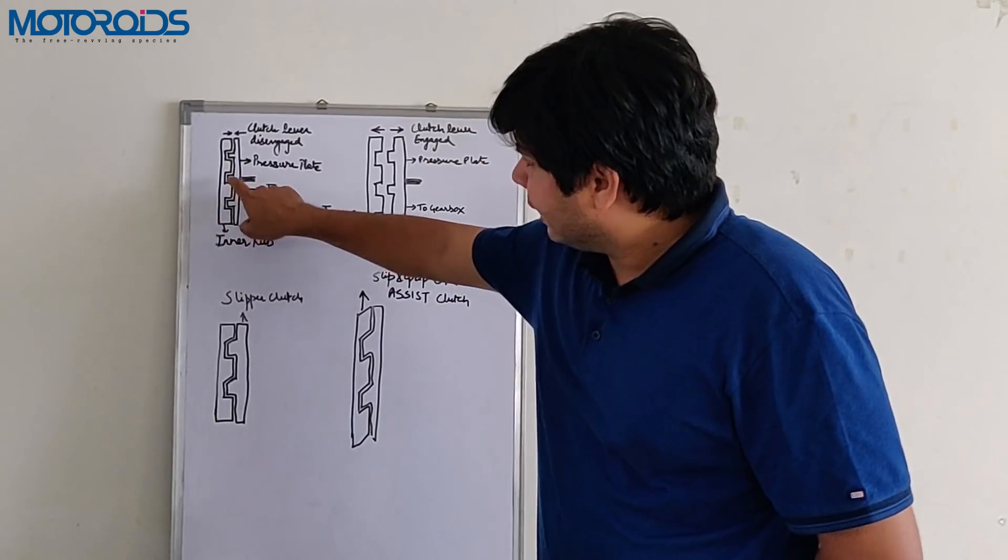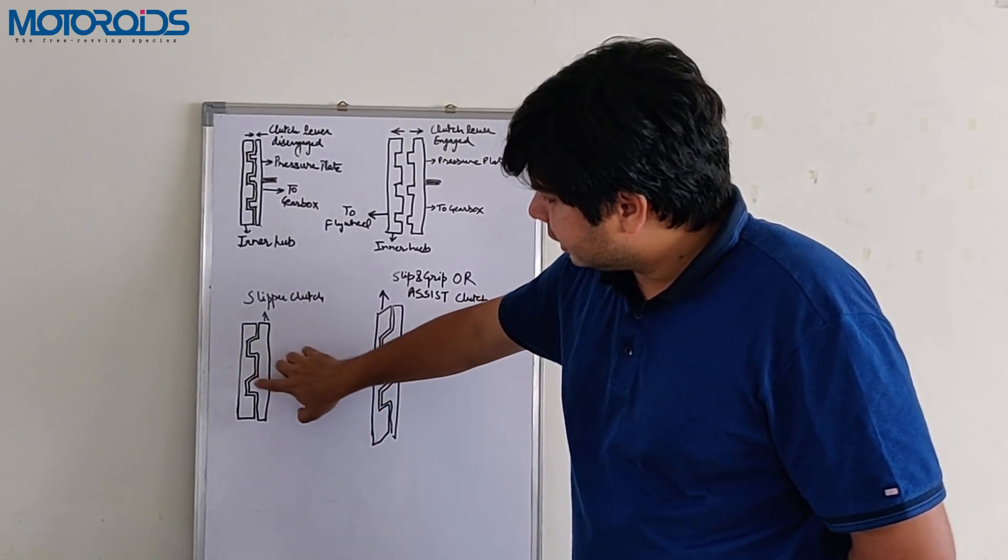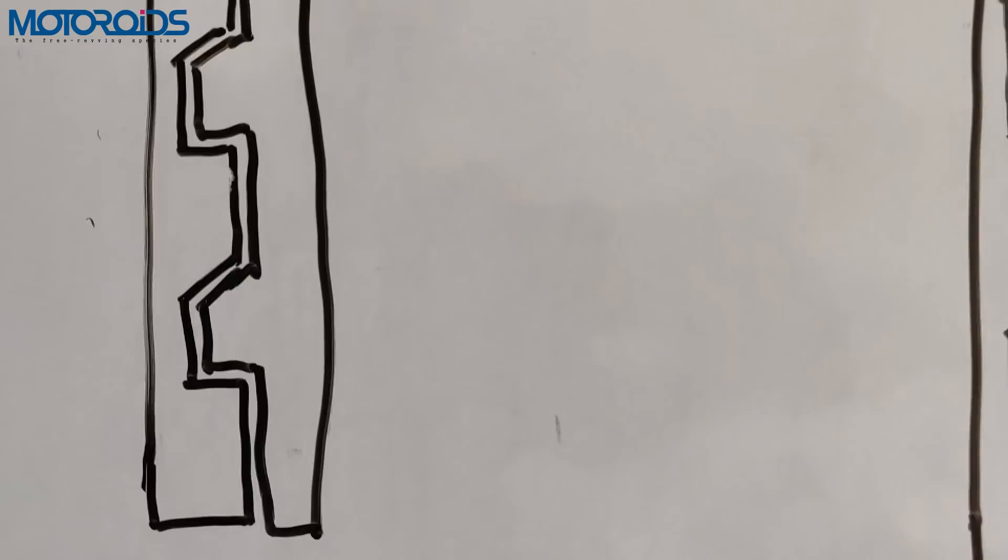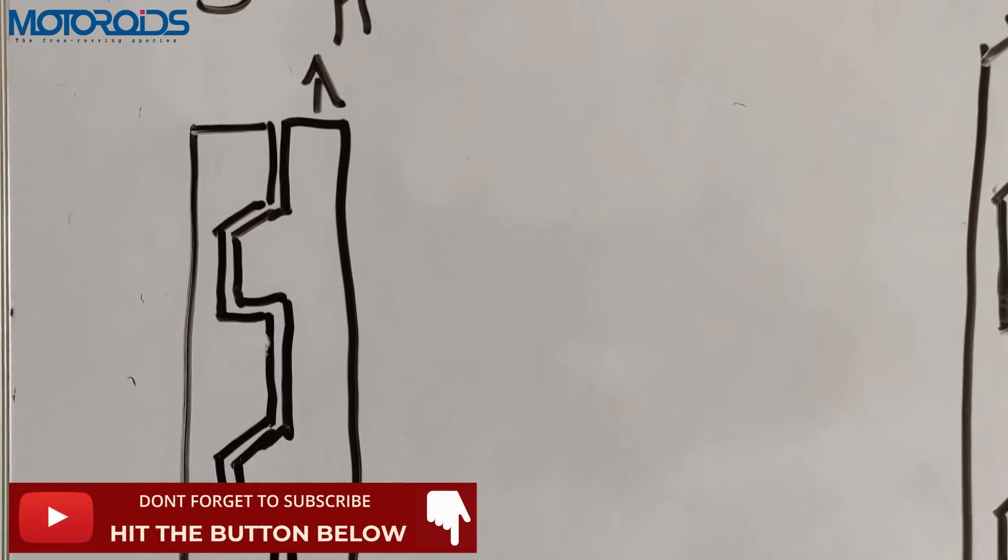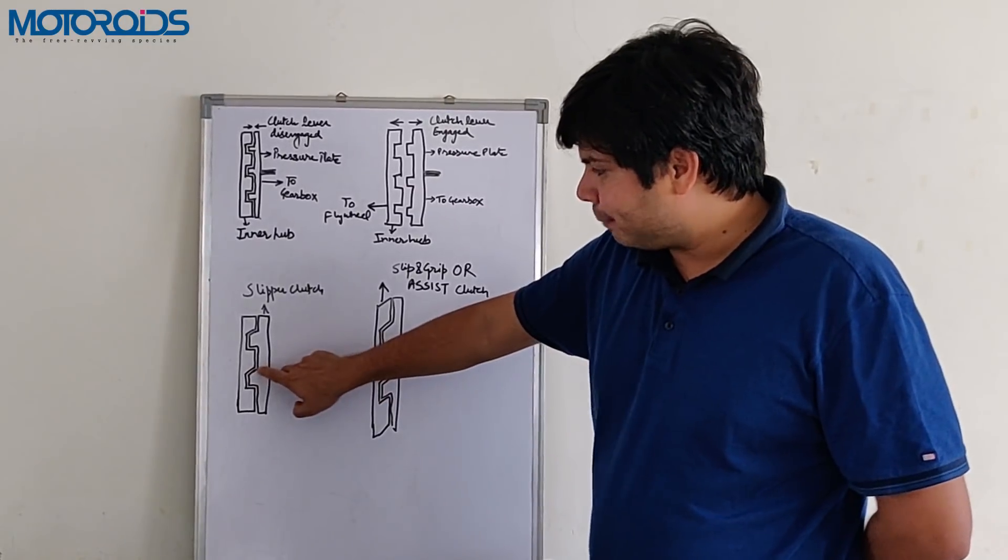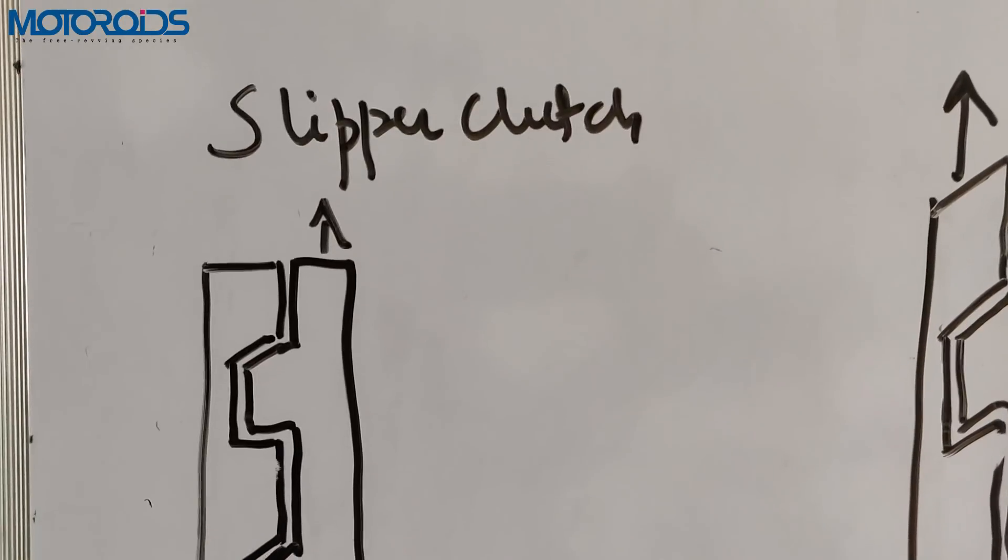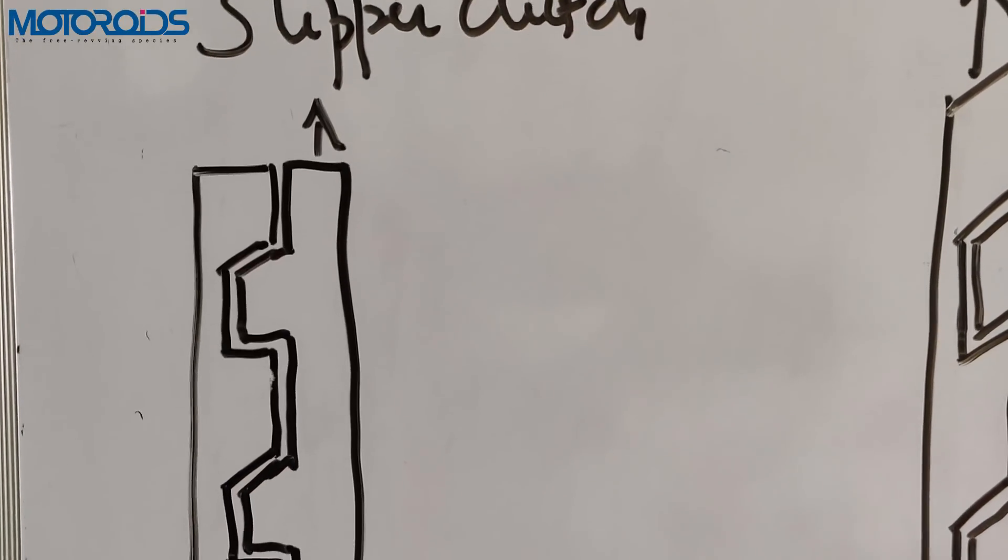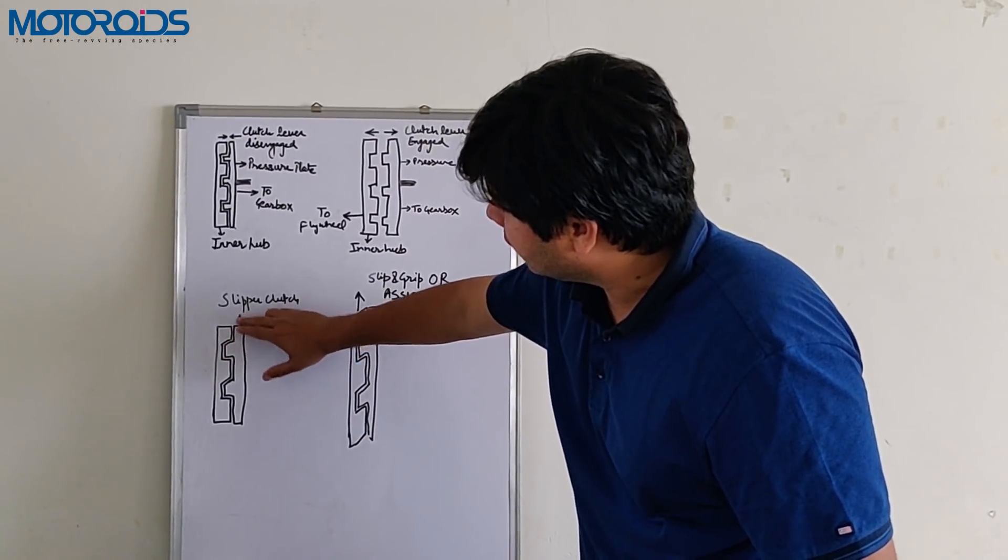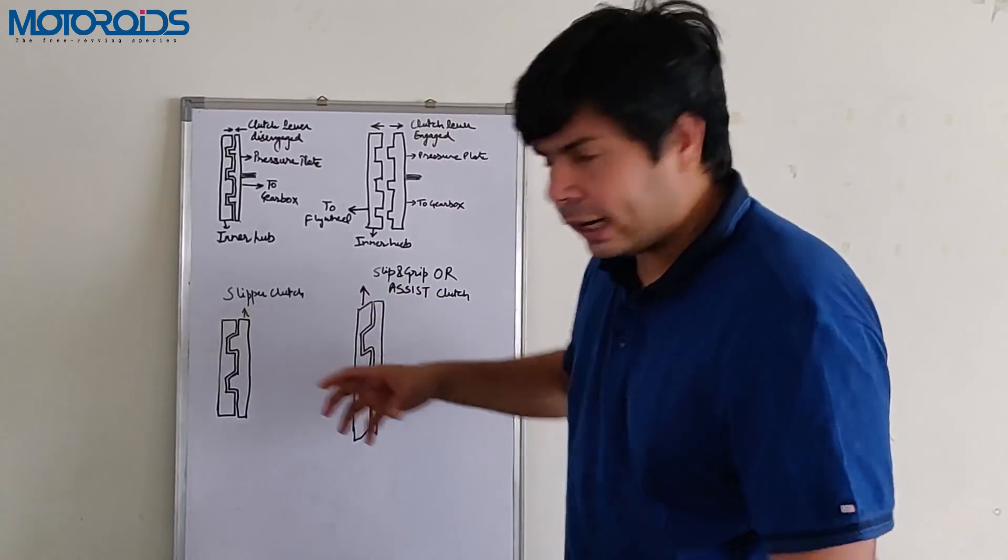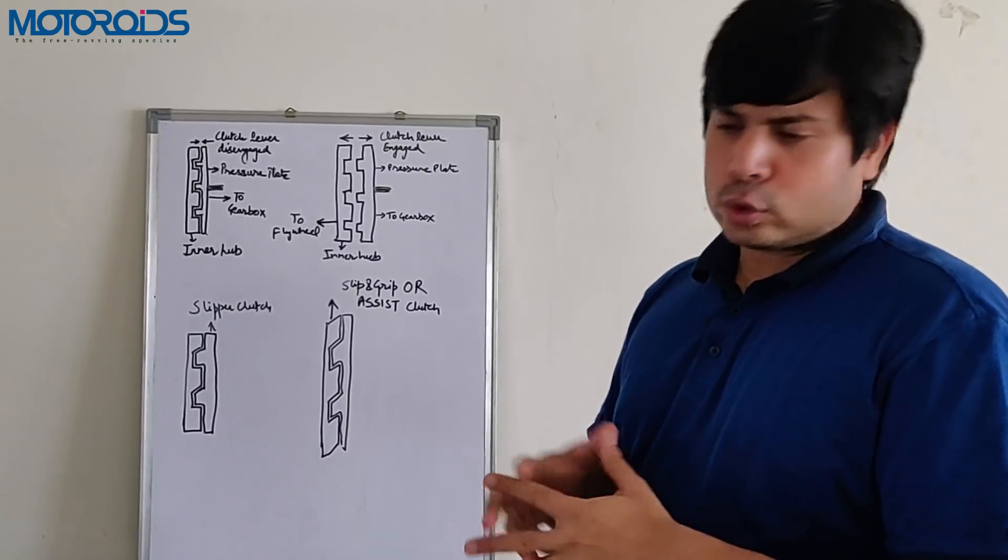To overcome that we have a concept of slipper clutch. Unlike these square notches that you have here, what you have here is these ramps. As you can see there is a slight slant to it. Imagine a situation where the pressure plate is trying to move faster than the inner hub. Since you have these ramps here, what will happen is if you downshift too aggressively, the additional wheel speed will not translate into the pressure plate making the inner hub move faster with it. What will happen is it will just slip over it and keep slipping over it until it comes to an equilibrium. That's how the wheel locking can be prevented.